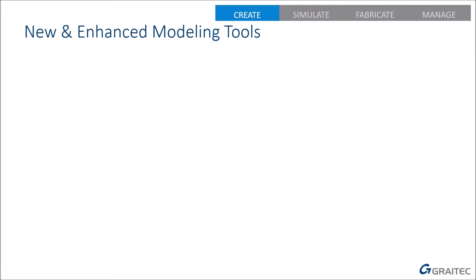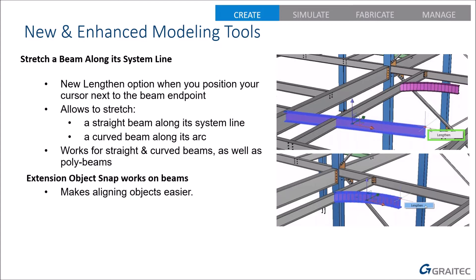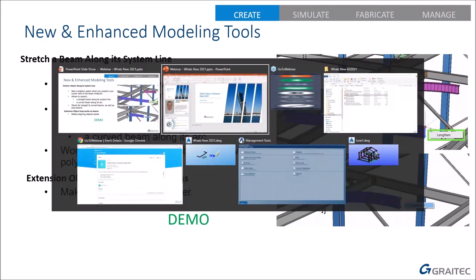The first modeling change is that you can now stretch a beam along its system line. When you select a beam you get grips at either end, and hovering over a grip gives you the Lengthen option. When you use that, you lock onto the system line of that beam, so moving it will only extend along its own system line — whether that's straight or curved — stopping you from accidentally changing the direction of the beam. The extension object snap also works on beams, letting you project where a beam would go beyond its end to align things more easily.